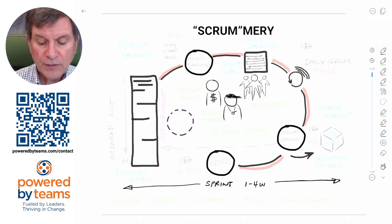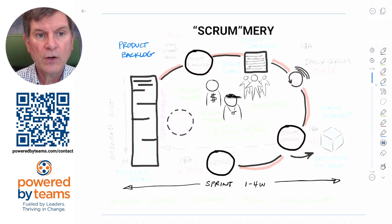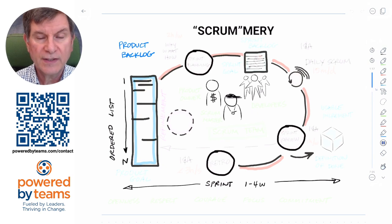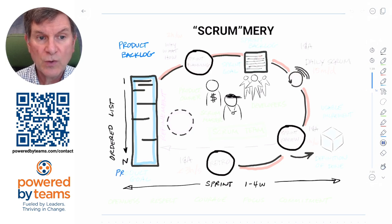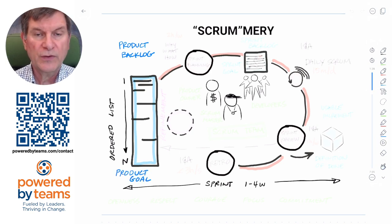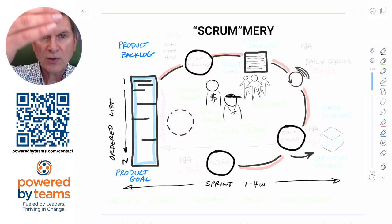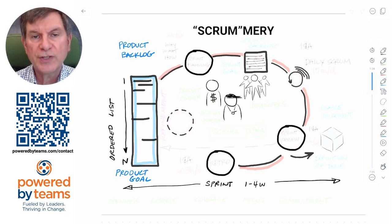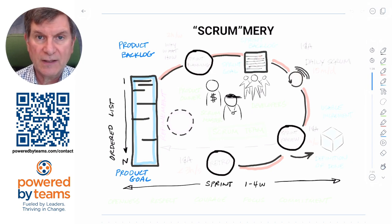Another good place to start with Scrum is with one of the artifacts — the product backlog — which is an ordered list of everything that you want to go into the product. It's the single source of truth from which the team is going to work, and it's centered around a product goal, which is the commitment for the product backlog. That product goal is a medium- to long-term tangible future state of the product that gives the team a target to plan against.